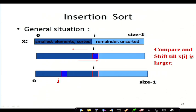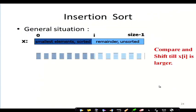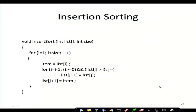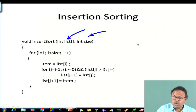We compare and shift until x[i] is in the larger zone — continuously shifting elements. Ultimately x[i] will be larger than all the elements to its left, so the sorted portion extends by one. The insertion sort function is void because it is not returning anything; it takes the list and its size as parameters.